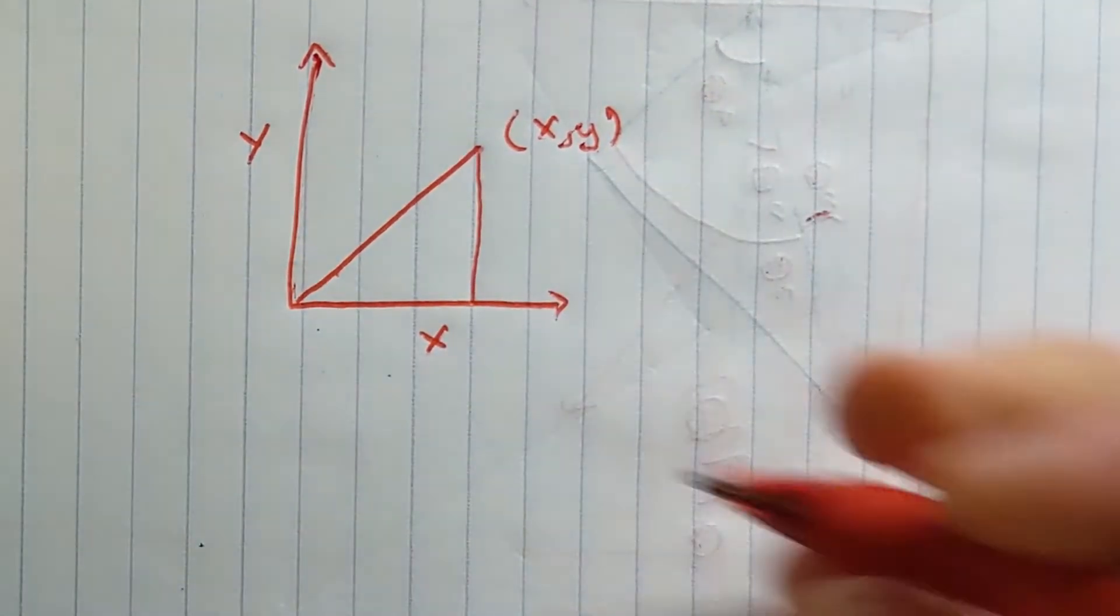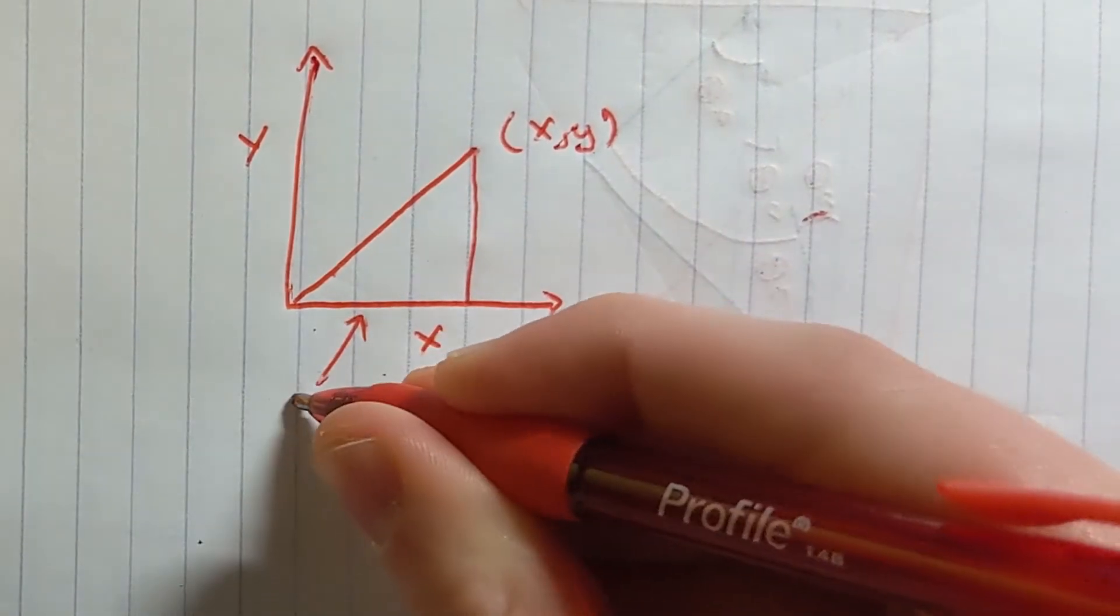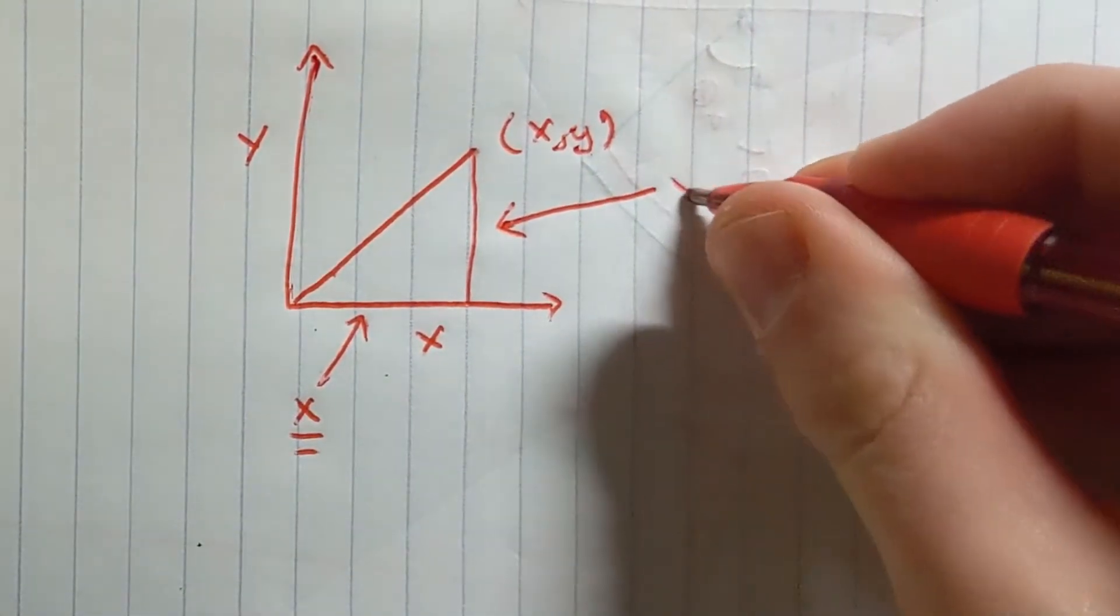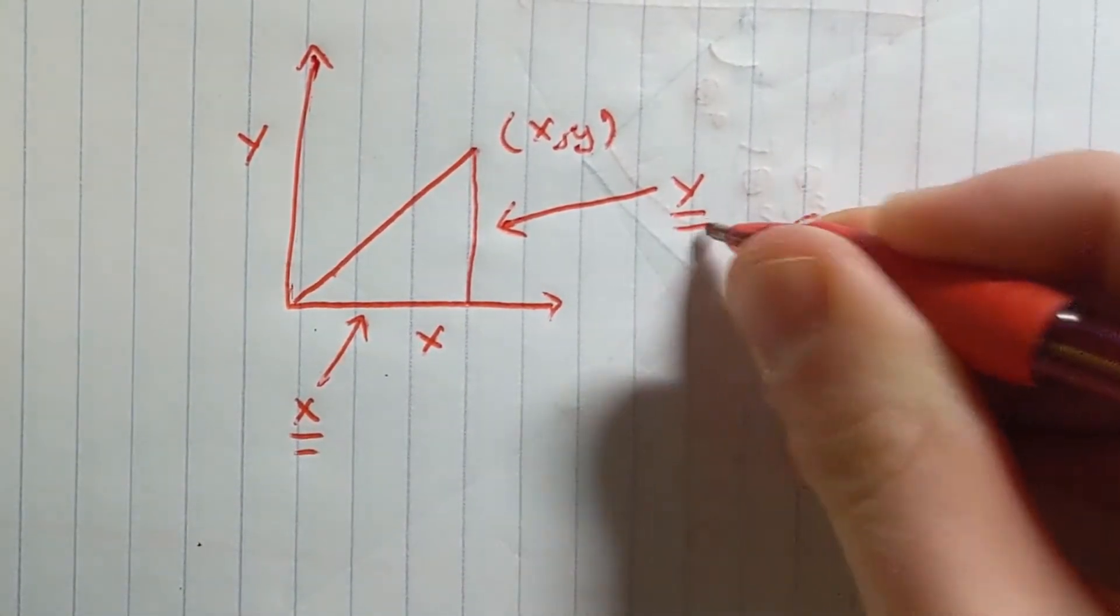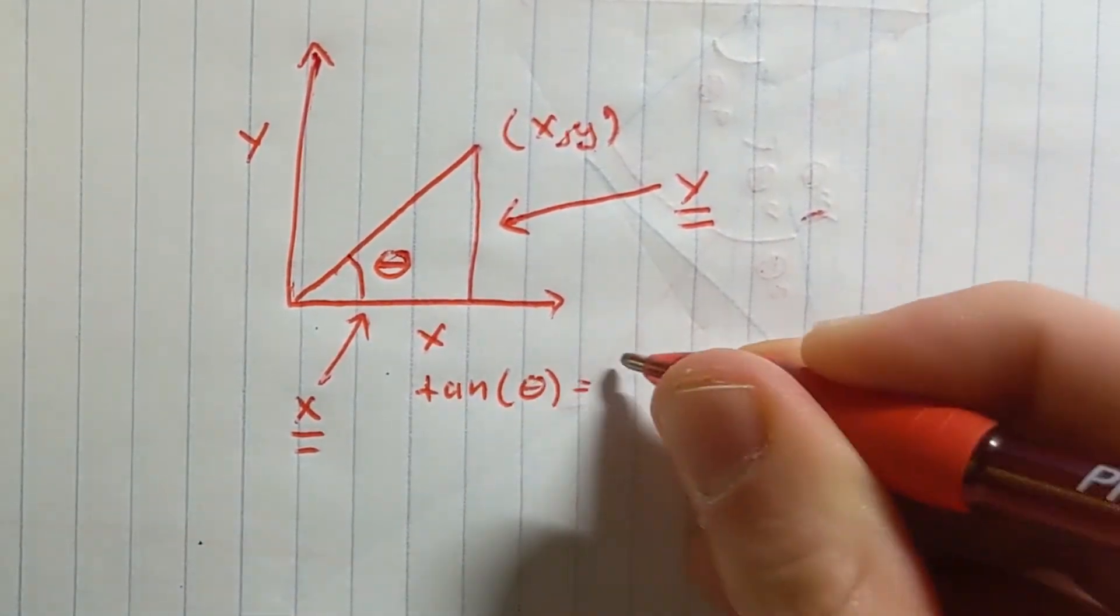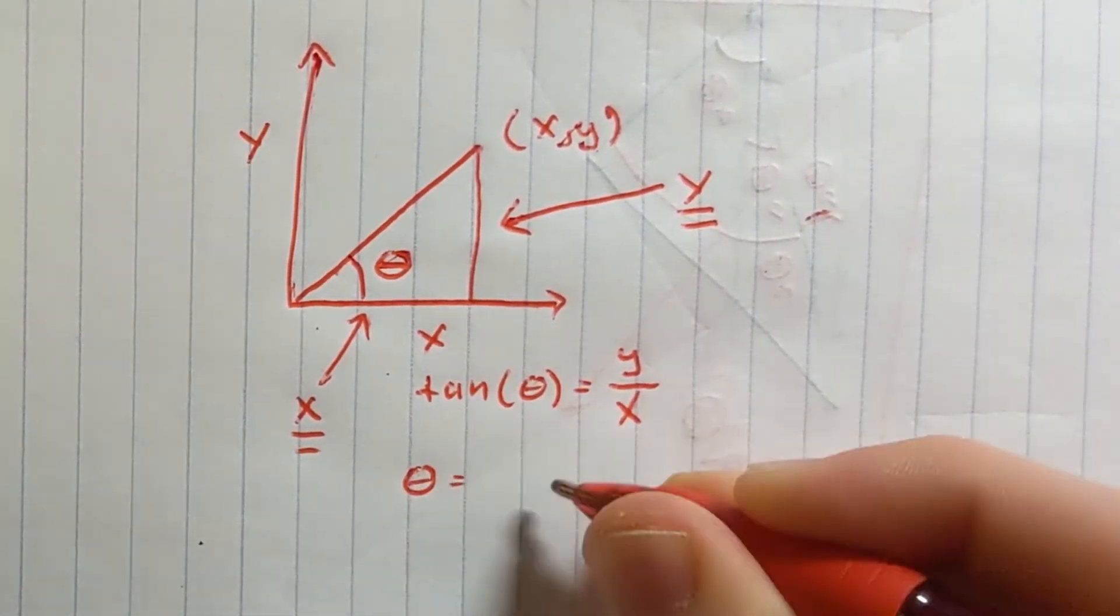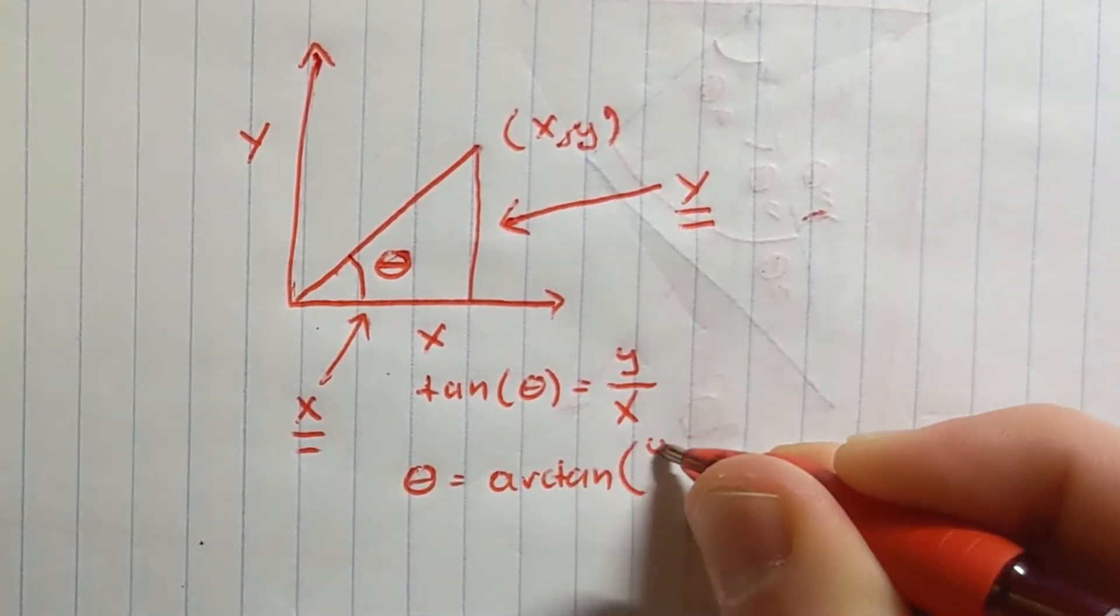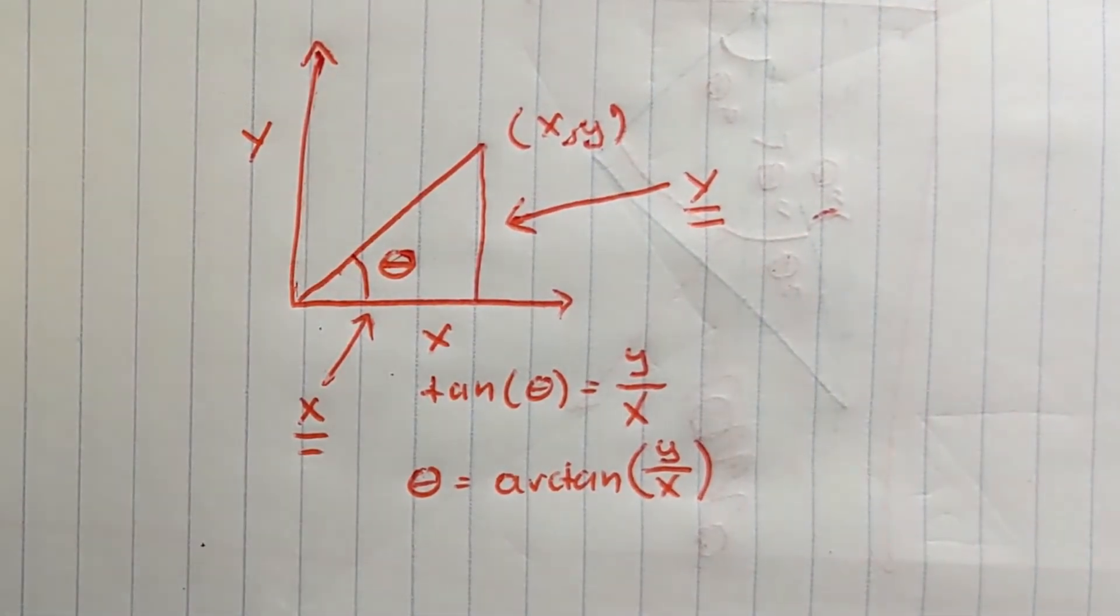While the opposite side always corresponds to the y value. Since tangent of theta equals opposite divided by adjacent, theta equals arctangent of opposite divided by adjacent. This angle is the angle that the base servo rotates to.